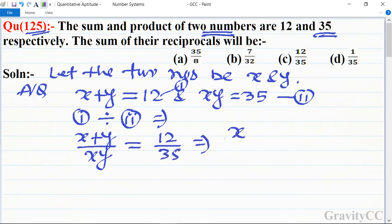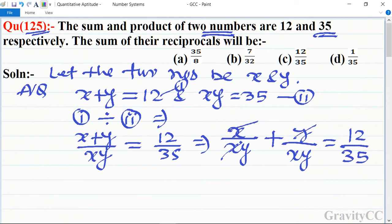This implies that x/xy + y/xy = 12/35. Here, x's cancel and y's cancel, so we get 1/y + 1/x = 12/35.